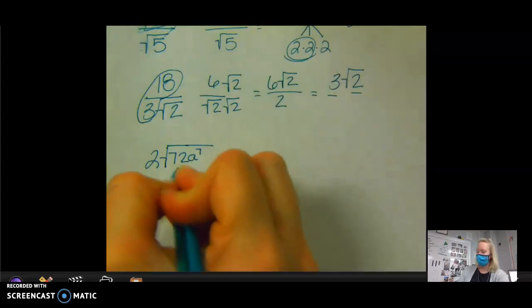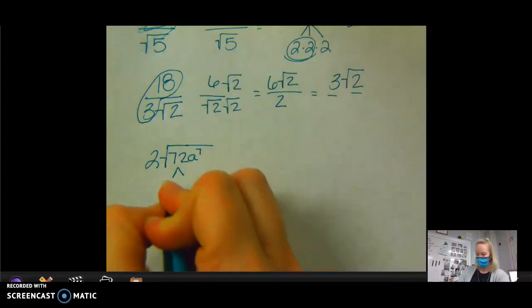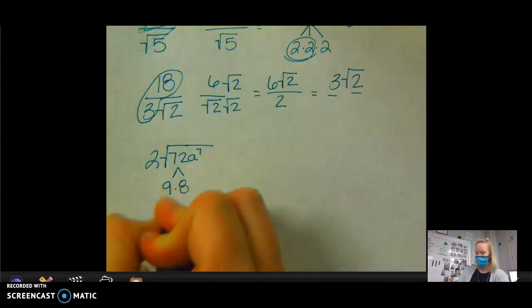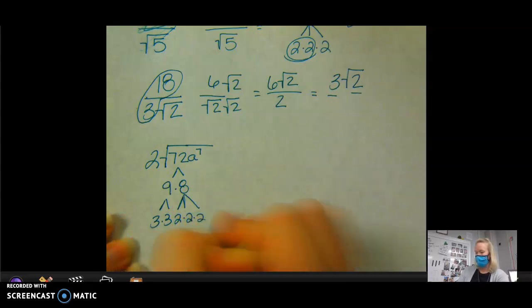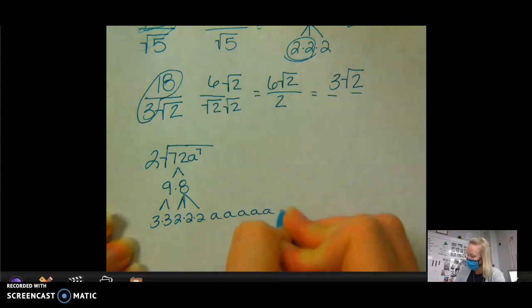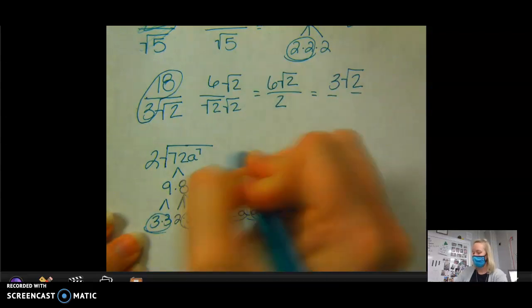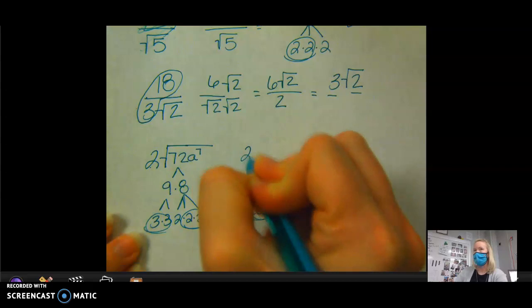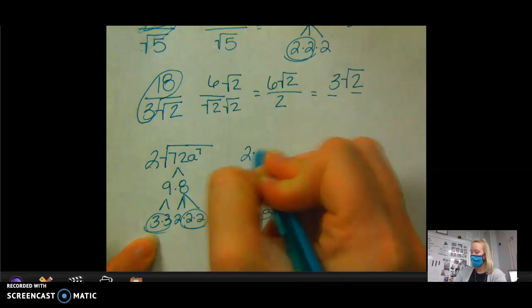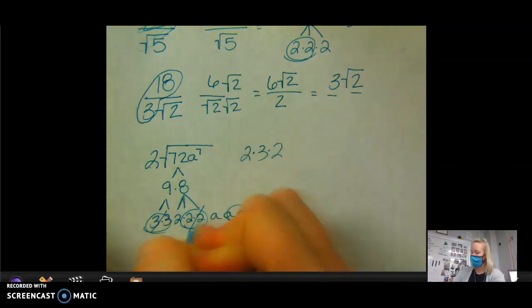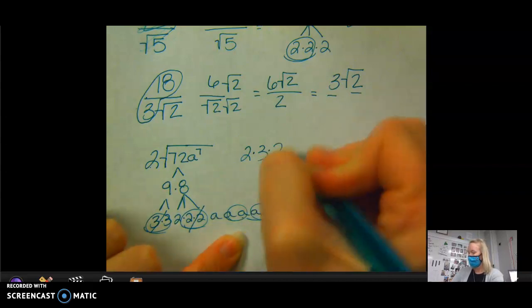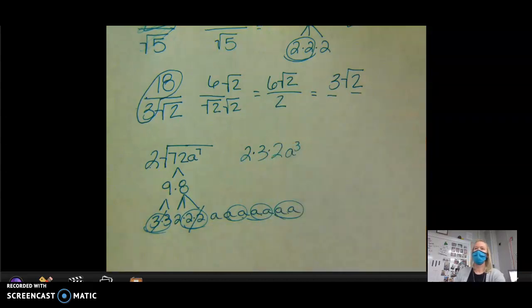So let's break down 72. What does that break down into? 9 times 8. 9 breaks down into 3 times 3, and then 8 breaks down into 2 times 2 times 2. And then I have 7 A's, right? So I have 1, 2, 3 pairs of A's. I have a pair of 2s and a pair of 3s, right? So out is going to come. So I already have a 2 out there, so I'm going to leave that 2 out there. I'm going to take out a 3 from this pair. I'm going to take out a 2 from this pair. And then I have 1, 2, 3 A's that I'm going to take out. Does that make sense so far?